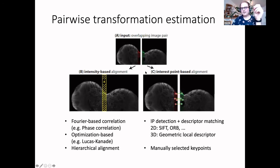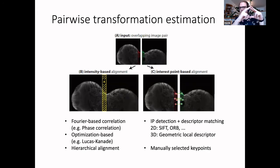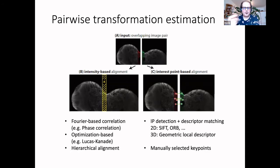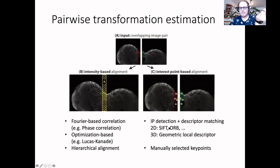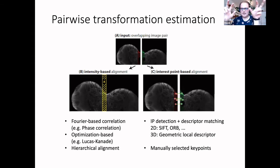You can also do image alignment another way: detecting interest points and key points in both images, then matching those points to each other and mapping their coordinates so they lie on top of each other. Some methods are automatic — for example, SIFT or ORB for 2D images, or the three-dimensional geometric local descriptor used in multi-view reconstruction for 3D images. You can also pick key points manually, as John will mention with BigWarp for manual alignment of big data.